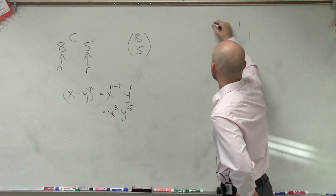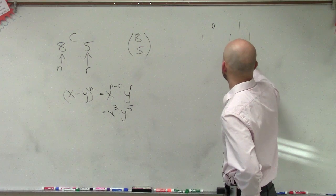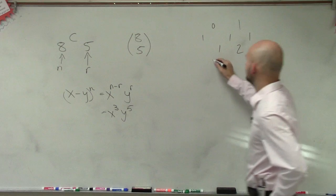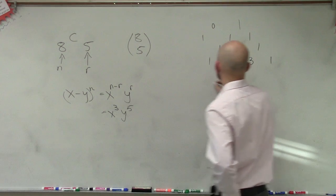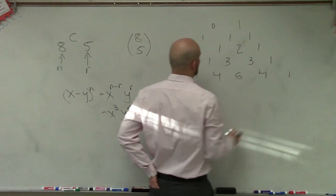So this would be x to the 0. That's x to the first. And then we have, remember, you add them up. So 1 plus 1 is 2. And then we'll have 1, 3, 3, 1, 1, 4, 6, 4, 1.